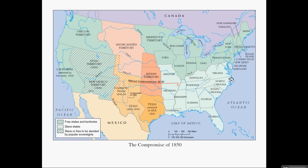So as a recap of the Compromise of 1850: California is a free state, popular sovereignty is enacted, no slave trade in D.C., a little border dispute is settled, and there's a stricter Fugitive Slave Clause. Those are the huge ones — the ones you want to worry about for IB.